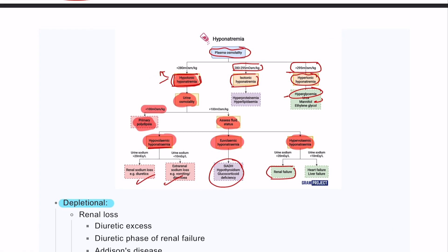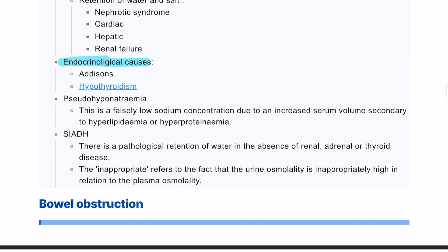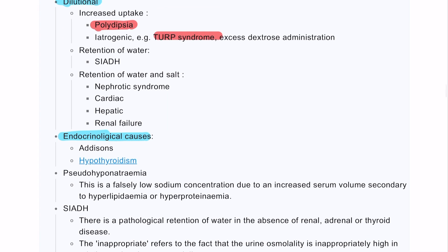This is how we investigate hyponatremia: start by assessing plasma osmolarity, then urine osmolarity, then assess the fluid status of the patient whether they are dehydrated or not. That was gastric outlet obstruction and also hyponatremia causes and clinical picture. Thank you.